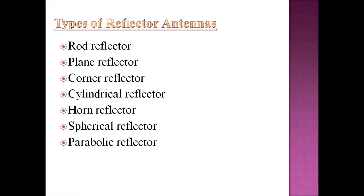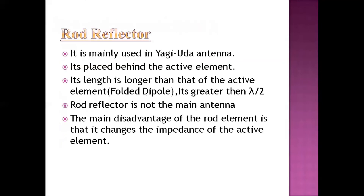The active element is used in Yagi-Uda antennas. It is mainly used in Yagi-Uda antennas, placed behind the active element. The active element is a folded dipole, and the folded dipole is used in this rod reflector.